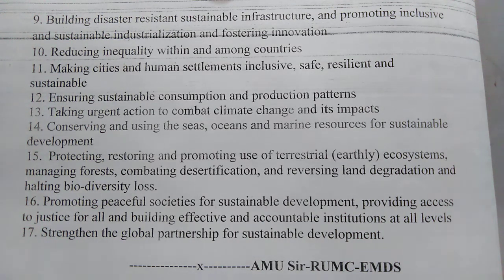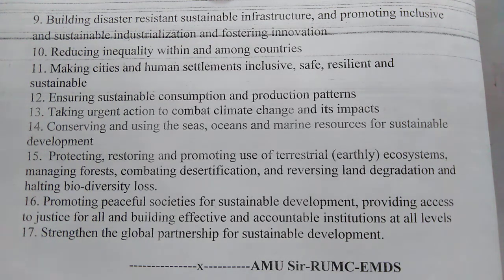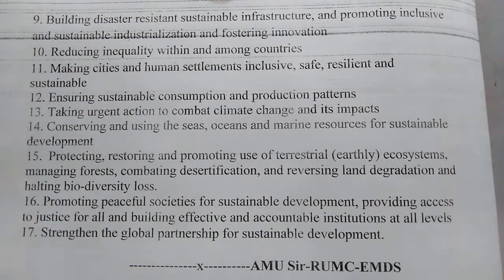Goal sixteen: promoting peaceful societies for sustainable development, providing access to justice for all, and building effective and accountable institutions at all levels. We have to maintain peace and discipline in every sphere of social life, establish justice for all irrespective of caste, creed, or religion, and ensure accountability in all democratic, state, and social institutions at all levels. Goal seventeen — the last goal of SDG: extending the global partnership for sustainable development. We have to establish a strong global relationship among countries to attain sustainable development goals by 2030.